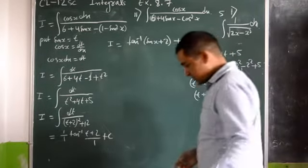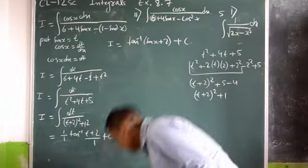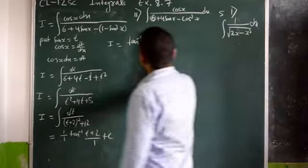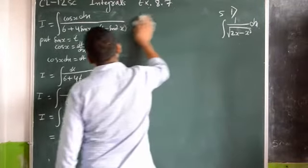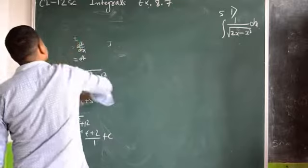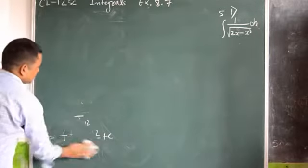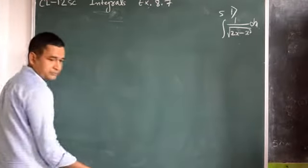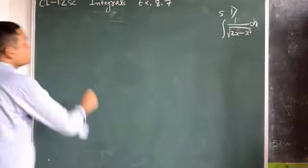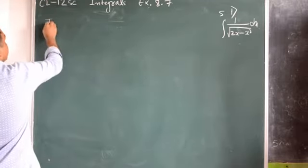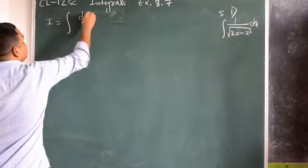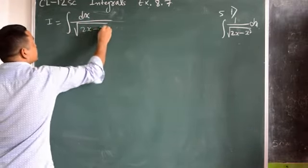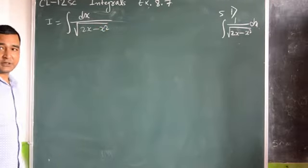Now the last question is question 5, sub-question 1. I equals the integral of dx divided by the square root of (2x − x^2). Again, we need to convert into completing the square form. Let me convert here. We start with 2x − x^2.